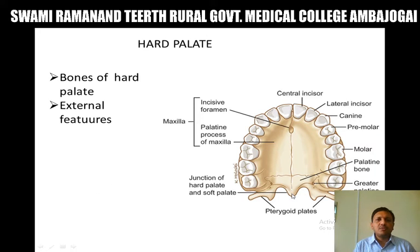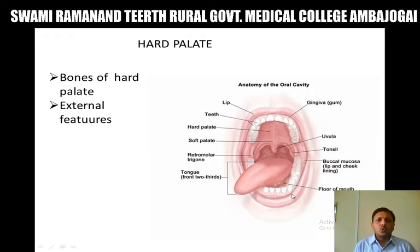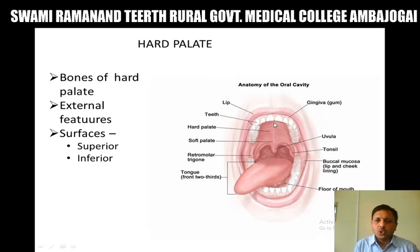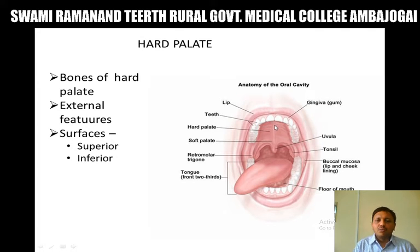Now we will go for the external features of the hard palate. The hard palate shows a superior surface and an inferior surface. The superior surface forms the floor of the nasal cavity, whereas the inferior surface forms the roof of the oral cavity. The inferior surface shows mucosa which is tightly adhered to the periosteum of the hard palate. In the midline, this mucosa shows one longitudinal ridge known as the palatine raphe. Along the anterior end of the palatine raphe, there is the incisive papilla, and deep to it, the incisive canal.